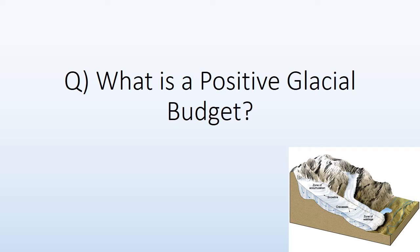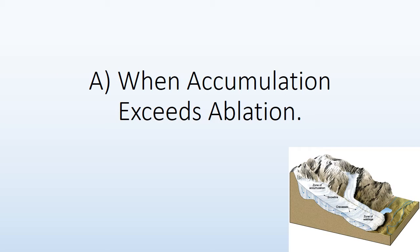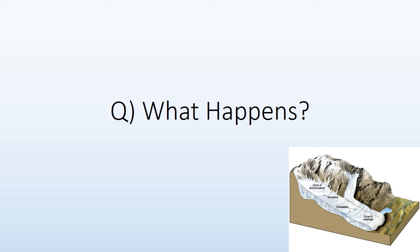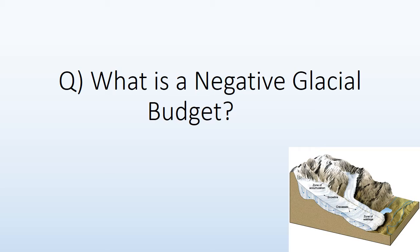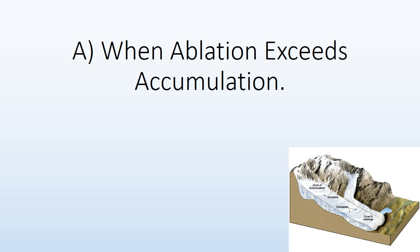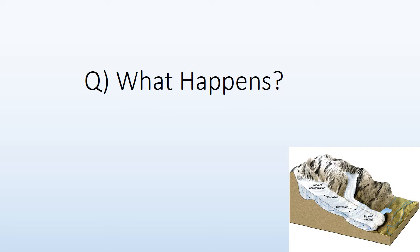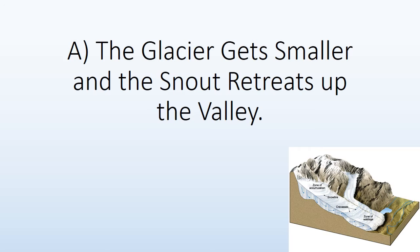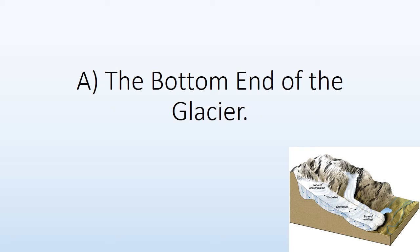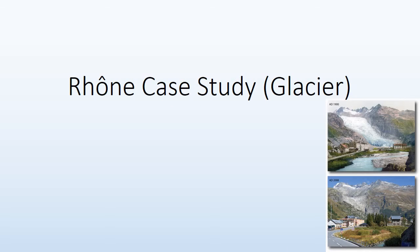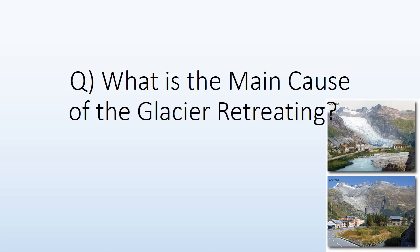A positive glacial budget is when accumulation exceeds ablation. When this happens, the glacier gets larger and the snout advances down the valley. The main cause of a glacier retreating is global warming.